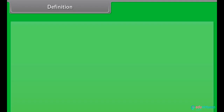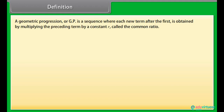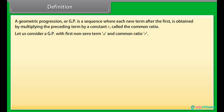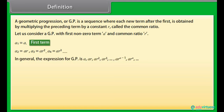A geometric progression, or GP, is a sequence where each new term after the first is obtained by multiplying the preceding term by a constant R, called the common ratio. Let us consider a GP with first non-zero term A and common ratio R. A1 = A, A2 = A×R, A3 = A×R², A4 = A×R³, and so on. In general, the expression for GP is: A, A×R, A×R², A×R³, up to A×R^(n−1), A×R^n, and so on. Where R = Aₙ / Aₙ₋₁.